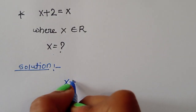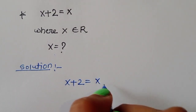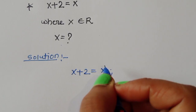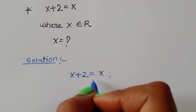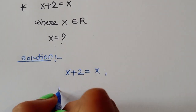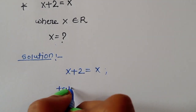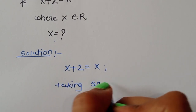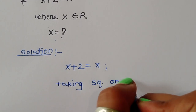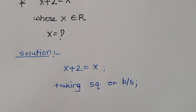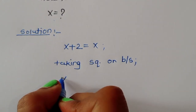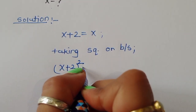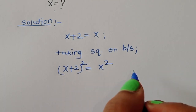√(x + 2) is equal to x — this is given. So we can do one thing: we can take the square on both sides. Taking square on both sides, we will get (x + 2)² is equal to x².